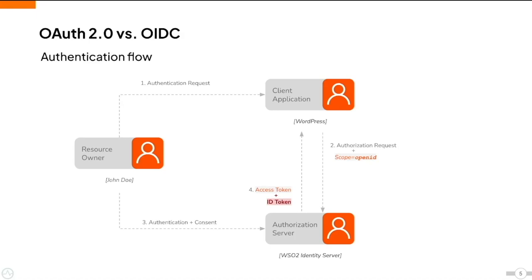First, the resource owner attempts to access the application. The application sends an authorization request to the authorization server. In return, the authorization server obtains the credentials from the user, validates them, and sends an access token to the application along with a new token called the ID token.